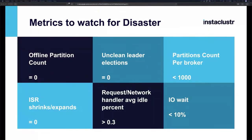Another important metric is unclean leader elections, which is off by default. A clean leader election means the new leader is fully replicated and has all the same messages as the previous leader. An unclean leader election means Kafka couldn't find any up-to-date brokers, so you're potentially losing data. This should always be zero.